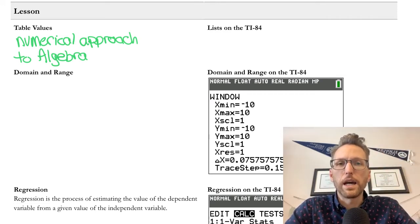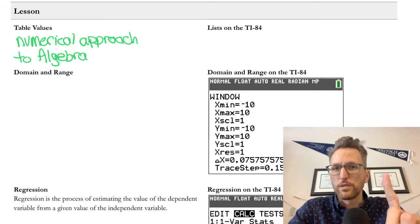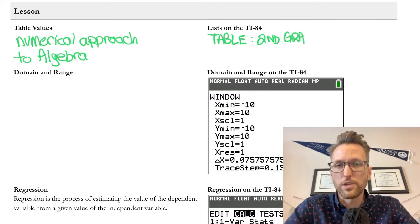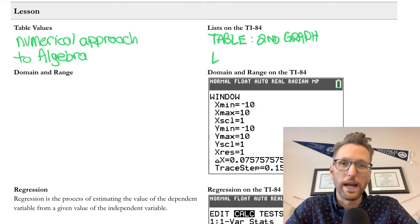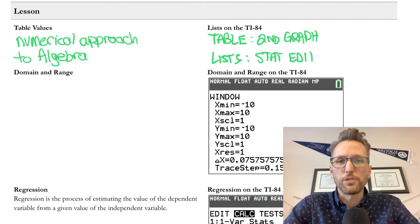Now, how do we take table values and work with the calculator? So there are two ways. Number one is using the table feature, which is second graph. But we usually do that to see data for an actual equation, like a linear function. But if we already have data, like we will have in our activity, then we're going to use the list function, which we've used already in a previous video, stat edit, where we enter that, and then we try to model algebraic concepts.